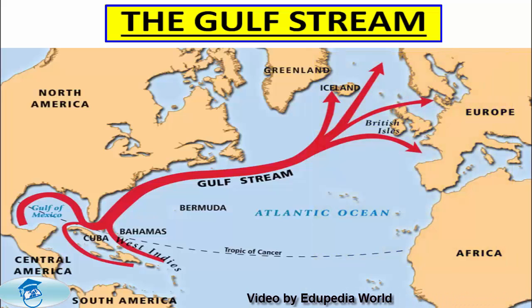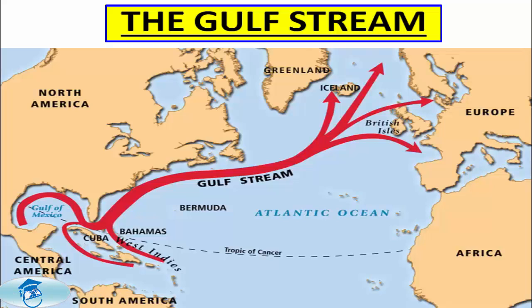The Gulf Stream influences the climate of the East Coast of North America from Florida to Newfoundland, and the West Coast of Europe. The climate of Western and Northern Europe is warmer than it would otherwise be due to the North Atlantic Drift, one of its branches. Its presence has led to the development of strong cyclones both within the atmosphere and within the ocean. The Gulf Stream is also a significant potential source of renewable power generation.